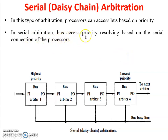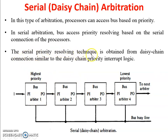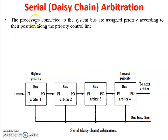In serial arbitration, bus access priority is resolved based on the serial connection of processors. As you can see in the figure, all processors are connected serially. This serial priority resolving technique is obtained from the daisy chain connection, similar to the daisy chain priority interrupt logic. Processors connected to the system bus are assigned priority according to their position along the priority control line.